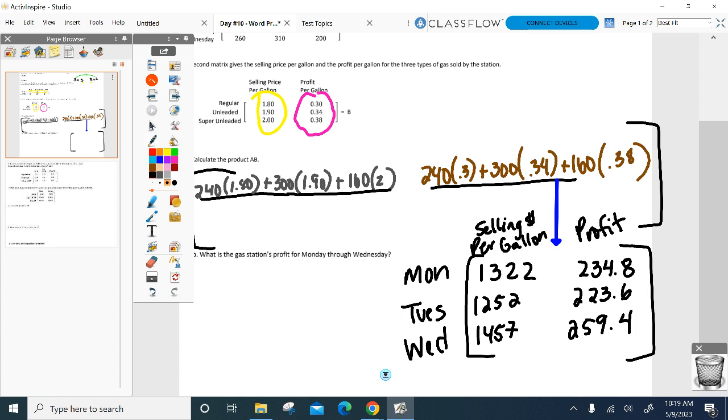That's how I identify what the rows and columns of my answer are. The rows always come from the first one, and the columns always come from the second one, just like we multiply. Now does this question become a little bit easier? I hope so. What's your profit Monday through Wednesday? I'm not going to circle it as my answer, but I'm going to add those up. Alright, there's my profit for Monday, Tuesday, Wednesday. So add them all up.